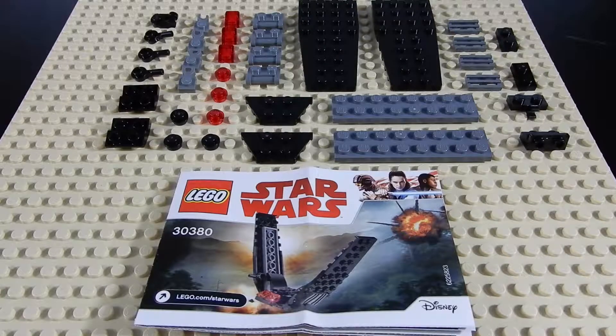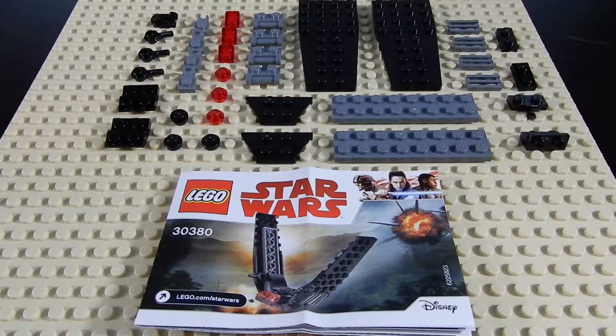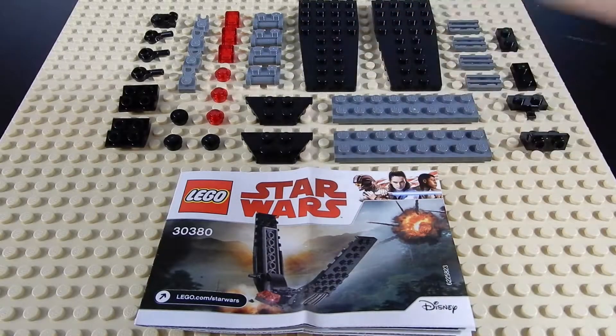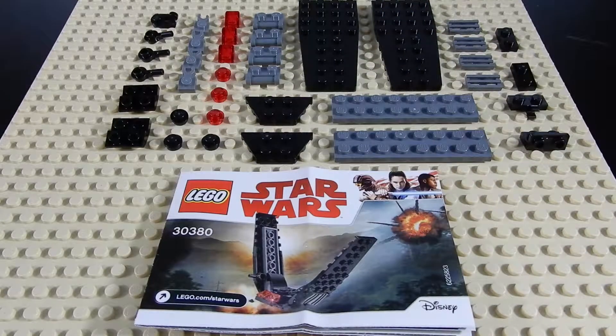This is 33 pieces, so a little bit smaller in piece count, but it does have a couple of the larger wing pieces that were not in the original set.